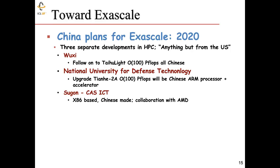In Wuxi, they're developing a follow-on to the TaihuLight based on Chinese technology at exascale. The National University for Defense Technology is developing an upgrade to the Tianhe-2, replacing Intel processors with Chinese ARM processors and an accelerator of their own design. A third path to exascale is through a company called Sugon, an integrator in China developing a machine with the Chinese Academy of Science based on an x86 architecture, made in China, in collaboration with AMD.